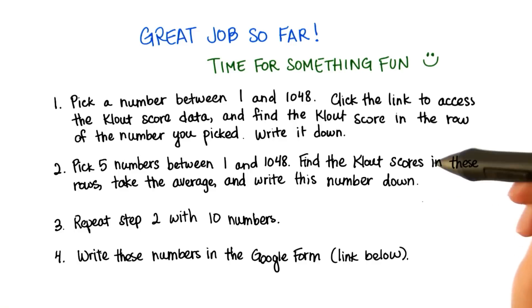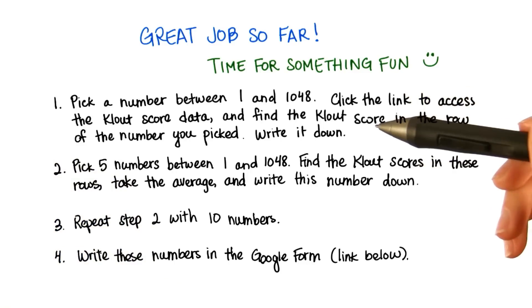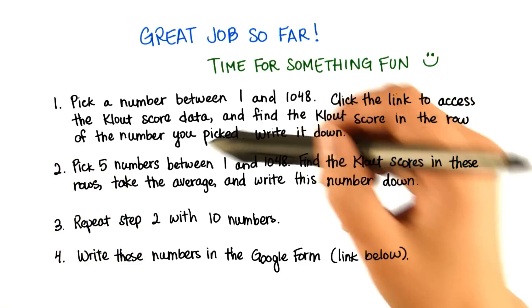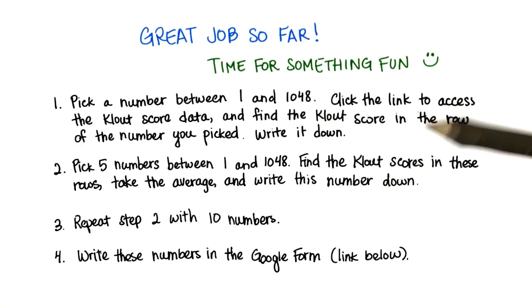So essentially, we're going to get a bunch of means, depending on how many of you guys participate. So let's say 1,000 of you participate. Then we'll have 1,000 clout scores, which we'll then create a distribution for. And this should look like the population distribution.